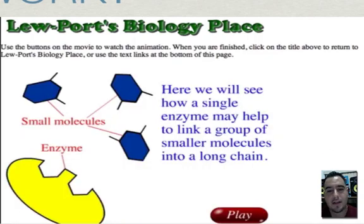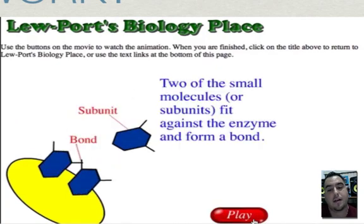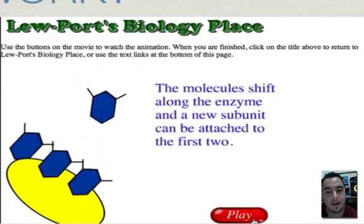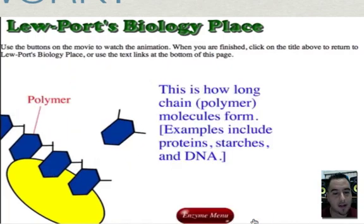Now we're going to see a single enzyme. It may help to link a group of molecules. Again, these two molecules fit in the enzyme. The molecule shifts along the enzyme and a new subunit is formed. And the process continues and you build polymers. That's how you build proteins, starches, and DNA.